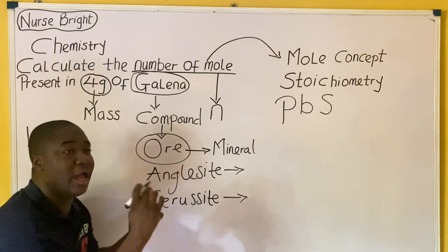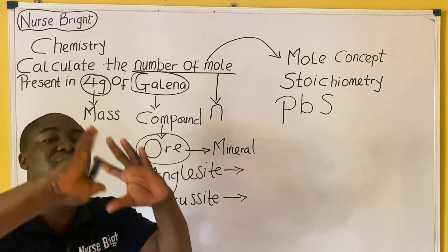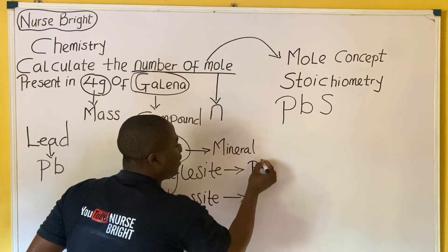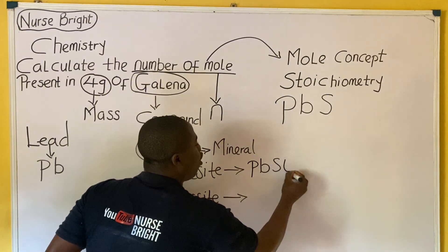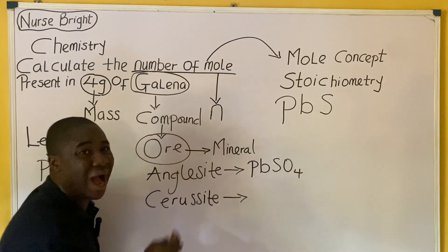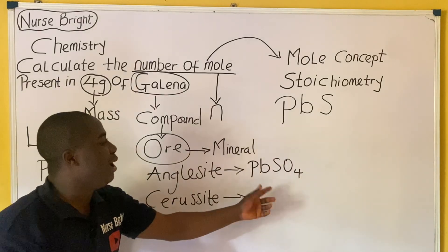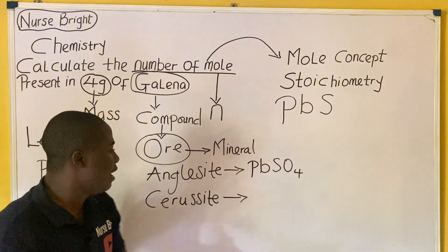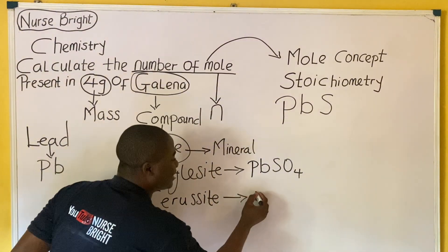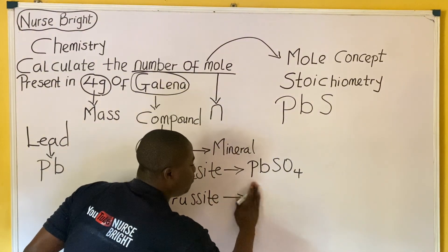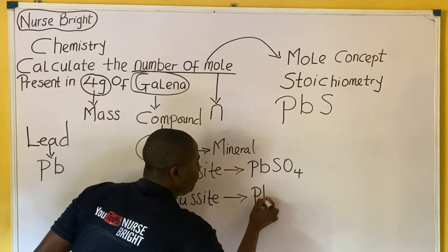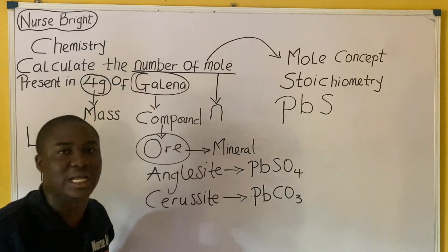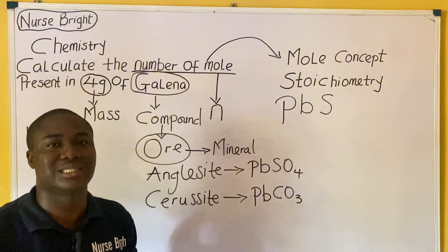These ores have their respective chemical formulas. For anglesite, the chemical formula is PbSO4 — lead sulfate, or lead tetraoxosulfate(VI). For cerussite, the chemical formula is PbCO3 — lead carbonate.